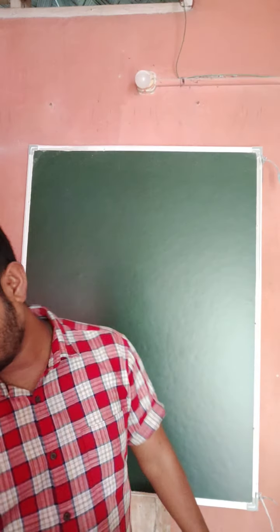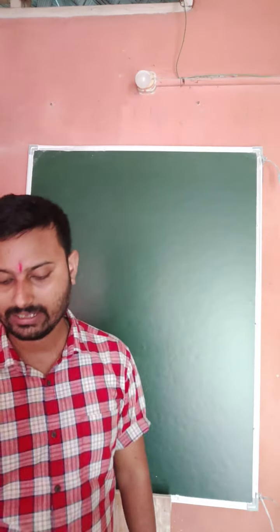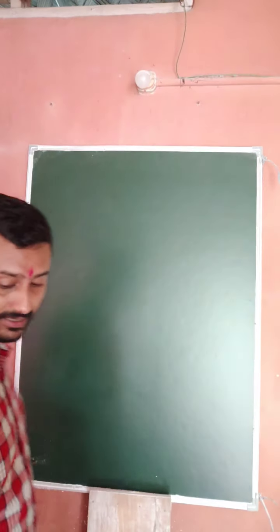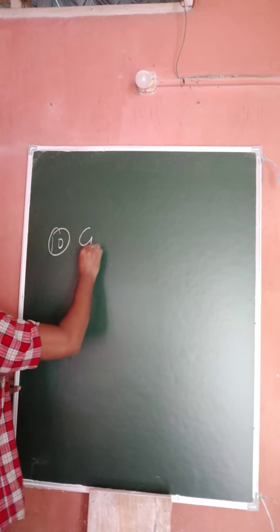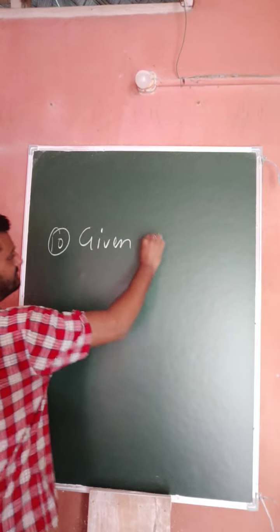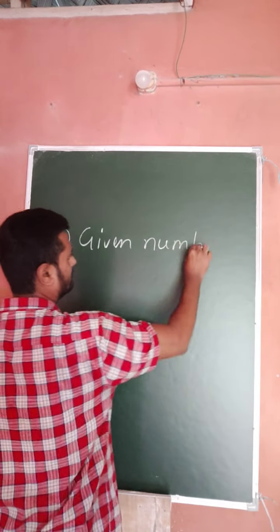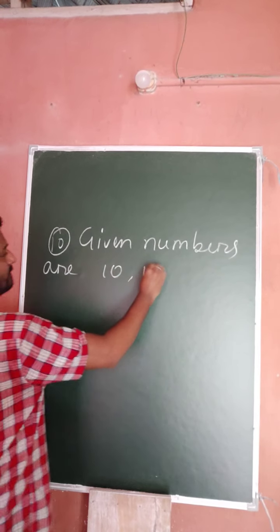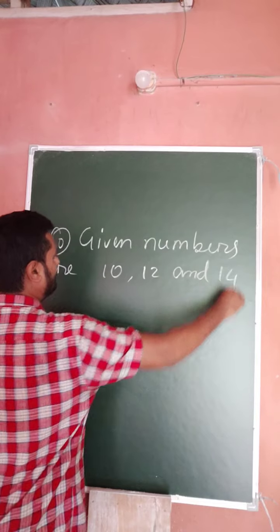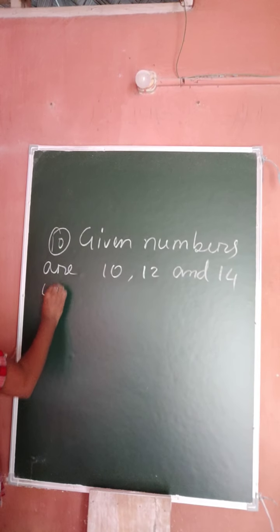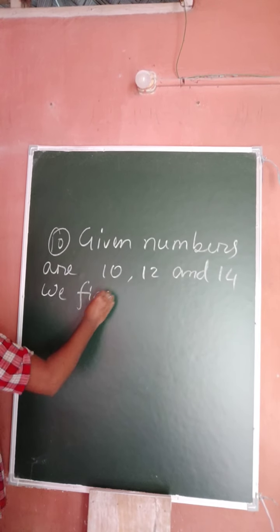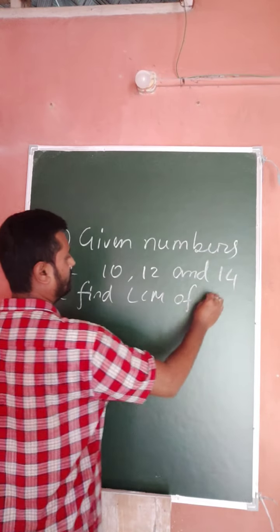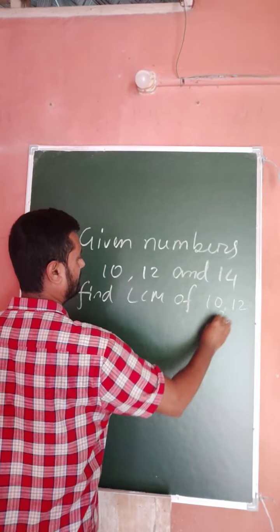Question number 10: find the greatest three-digit number exactly divisible by 10, 12, and 14. The given numbers are 10, 12, and 14. To solve this, we first find the LCM of these numbers — the LCM of 10, 12, and 14.